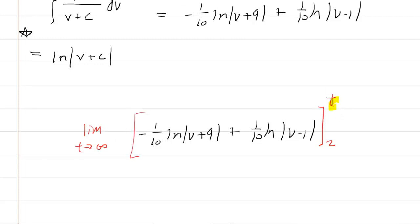So we'll go ahead and we'll plug in the upper bound first. We're going to have the limit as t approaches infinity. And we'll just plug t in for all the variables. So negative 1/10 ln of t plus 9 plus 1/10 ln absolute value of t minus 1.